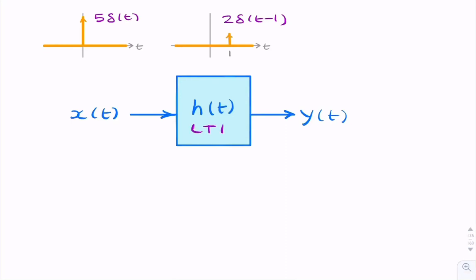In this question, we have an LTI system with an impulse response of a shifted Dirac function, a shifted impulse at t equals 1. And the question is,